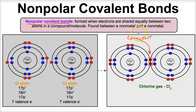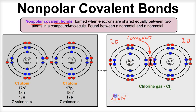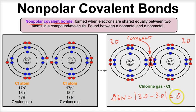Now we have to figure out whether it's polar or nonpolar covalent. We do that by determining the electronegativity values of the two atoms. The electronegativity of both chlorine atoms is 3.0 and 3.0. To get the electronegativity difference — delta — I take the absolute value of 3.0 minus 3.0, which equals zero. If the electronegativity difference is between about zero and 0.4, the bond is a nonpolar covalent bond.